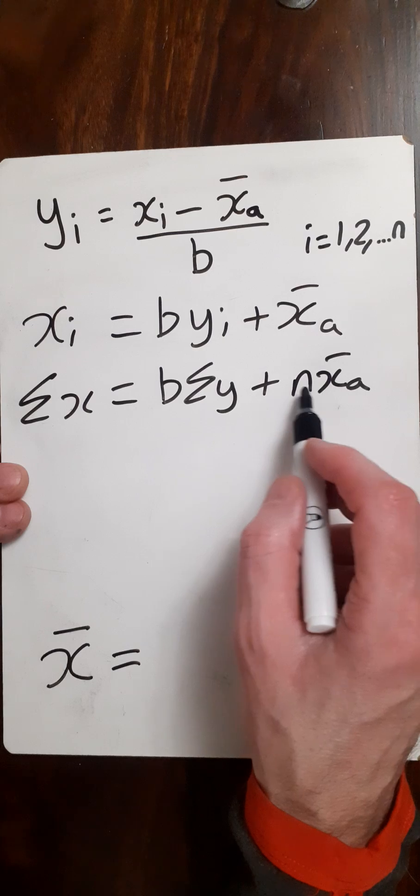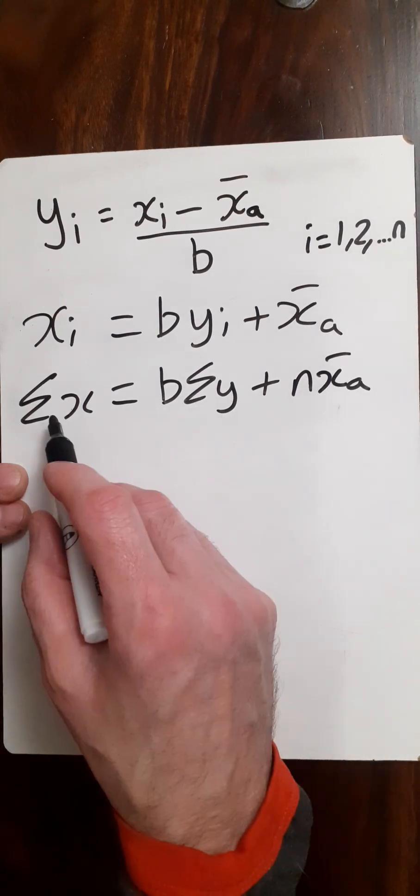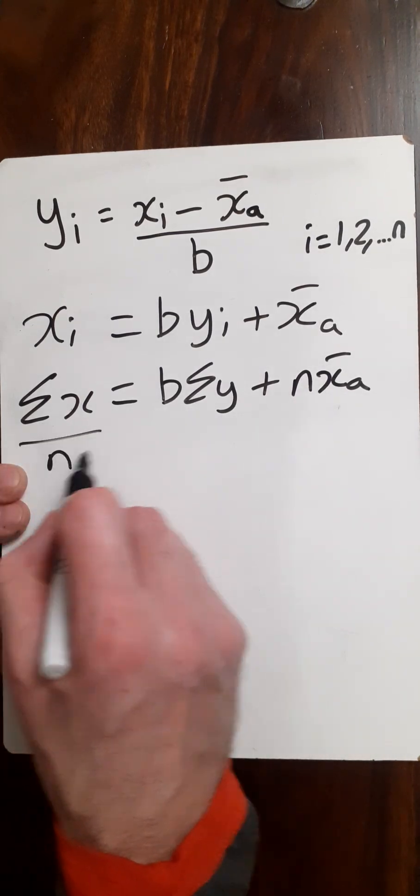Now what we're going to do is try and get this n out of here again as we put it into these two. So we just divide through by n.